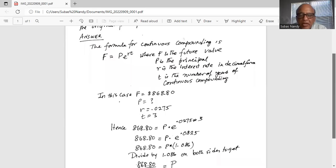If you use your calculator, you will find that e (which is 2.718) raised to the power of 0.0825 is 1.086.